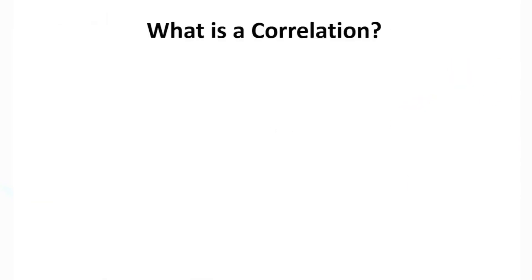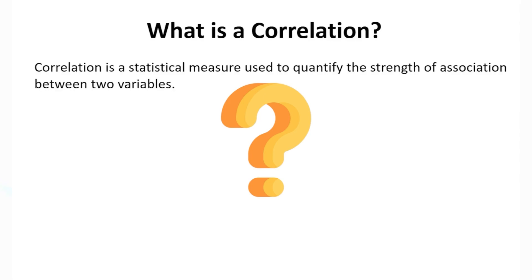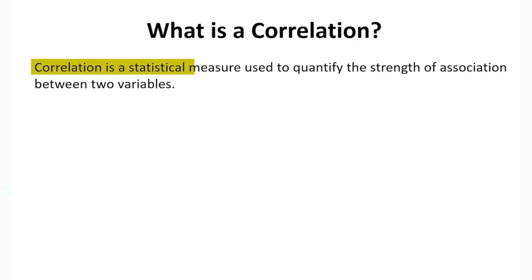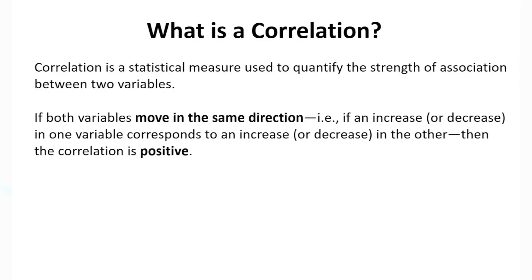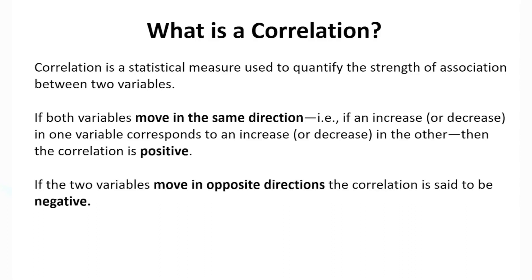Let's first understand what a correlation is. Correlation is a statistical measure used to quantify the strength of association between two variables. If both variables move in the same direction — that is, if an increase or decrease in one variable corresponds to an increase or decrease in the other — then the correlation is said to be positive. However, if the two variables move in opposite directions, the correlation is said to be negative.